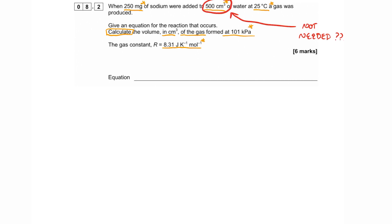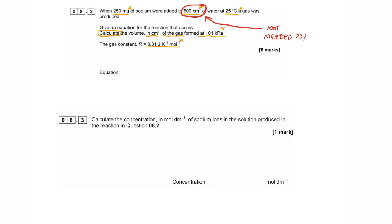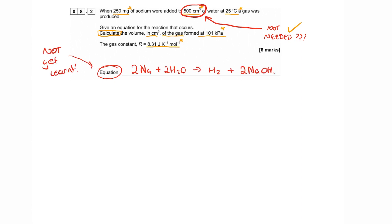The first thing you may be thrown off by is the fact that the volume of water is given. That's because in question 8.3, you're asked to calculate the concentration of the solution formed. The first thing you need is a balanced equation. As we learned last lesson, that's the only way we can learn the molar ratios. But the specific equation that you need for this question is learned in year two, the period three topic. So I'm just going to give you the equation. Two moles of sodium react with two moles of water to form a mole of hydrogen and two moles of sodium hydroxide. In the exam, that equation is worth one of the six marks available. So everything we've learned already will allow us to get the next five.